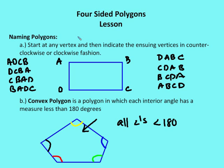Now, naming polygons. You can name a polygon in many different ways. The only criterion is you start at one vertex and then indicate the ensuing vertices in a counterclockwise or clockwise fashion. For example, going clockwise I could say ABCD, BCDA, CDAB, or DABC. Going counterclockwise I could say ADCB, DCBA, CBAD, or BADC. So there are eight different possible names for this particular four-sided polygon.